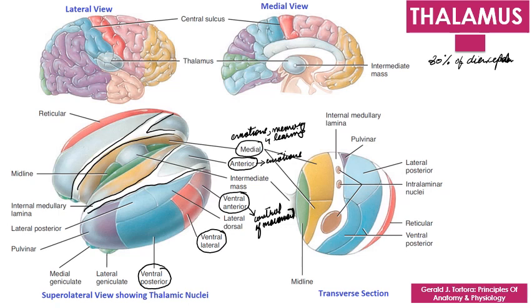The ventral posterior group receives information that passes from the periphery to the cerebral cortex, and is concerned with somatic sensations. That includes touch, pressure, pain, and vibration.